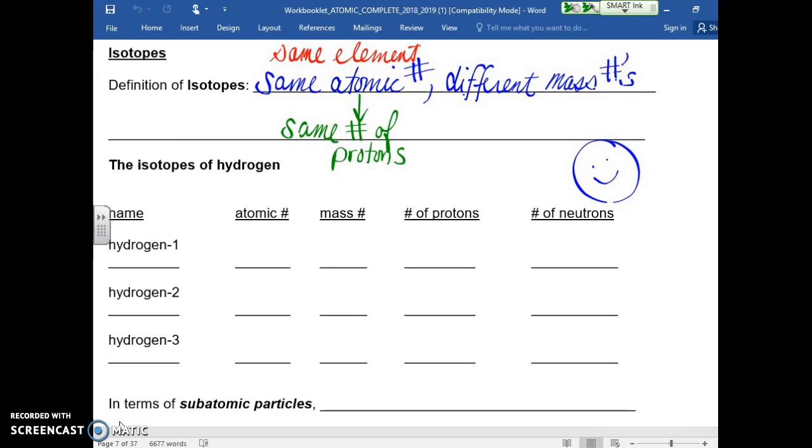Then how do we explain this, different mass numbers? Well, maybe we should first look at an example of an element and its assorted isotopes.